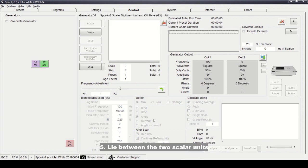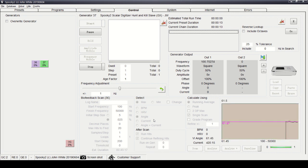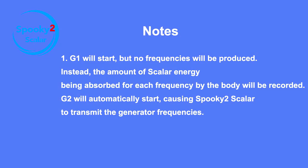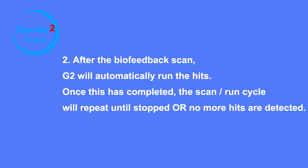Step 5: Lie between the two scalar units and ask an assistant to click the Scan button to start the biofeedback scan. G1 will start but no frequencies will be produced; instead, the amount of scalar energy being absorbed for each frequency by the body will be recorded. G2 will automatically start, causing Spooky 2 Scalar to transmit the generator frequencies. After the biofeedback scan, G2 will automatically run the hits. Once completed, the scan and run cycle will repeat until stopped or no more hits are detected.